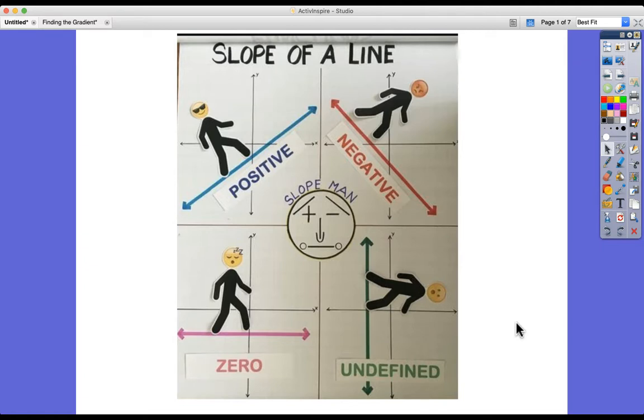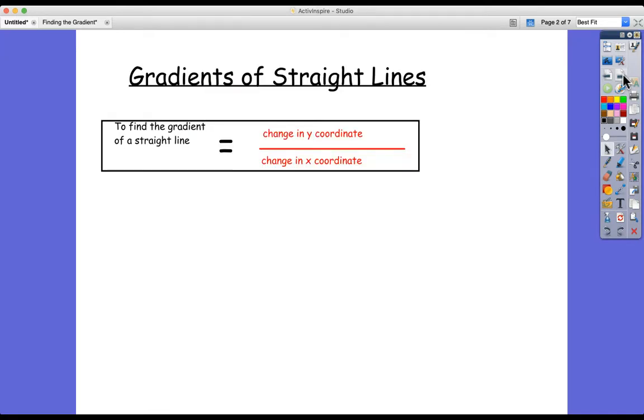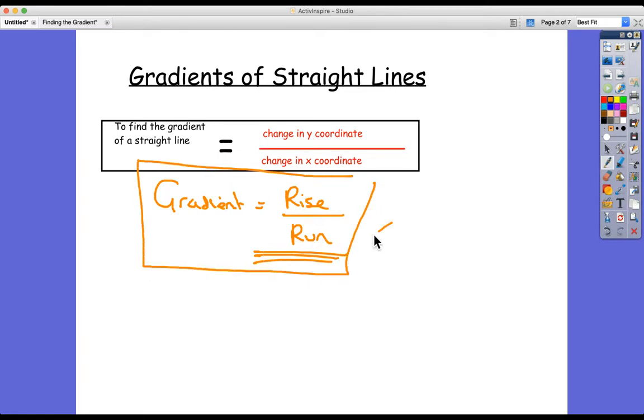As mentioned, the gradient is really important when we're trying to define the equation of a straight line. The way that we find the gradient is to do this process, which is to find the change in the y coordinate and divide it by the change in the x coordinate. I prefer to think of it as the rise divided by the run. That's really important and is always going to help you remember how to find the gradient: rise over run.